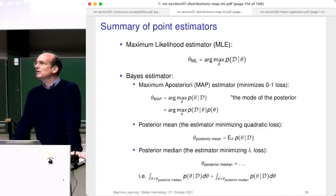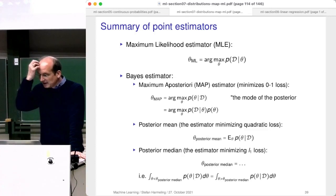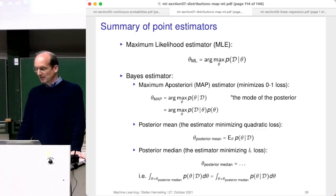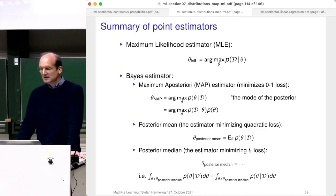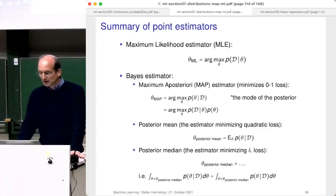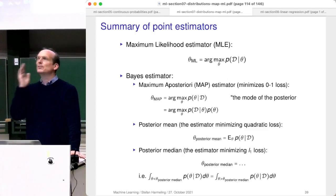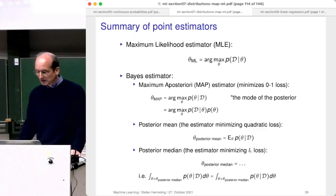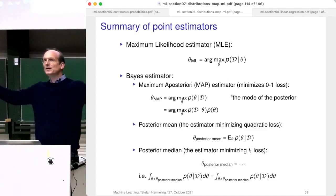Then there are the interesting Bayes estimators. Starting with a certain loss function in Bayesian decision theory, we can come up with different point estimates. One is the MAP estimator, which maximizes the posterior distribution — it corresponds to a certain integration for the 0-1 loss. There's another one when you minimize a quadratic loss function: you get the posterior mean, which is an average. And then there's also the posterior median, looking for the point such that 50% of the mass is smaller and 50% is larger. The posterior mean and median both look at the full density and require knowledge over the full density to be calculated.